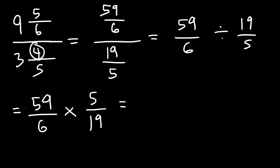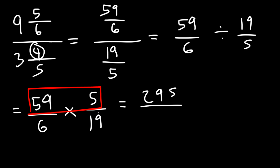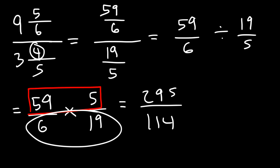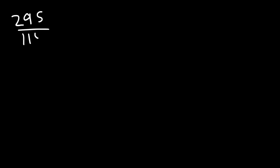Now let's multiply across. 59 times 5: 50 times 5 is 250, and 9 times 5 is 45, so 250 plus 45 is 295. Then 6 times 19: 6 times 20 is 120, take away 6, that becomes 114. So now let's convert 295 over 114 into a mixed number using long division.